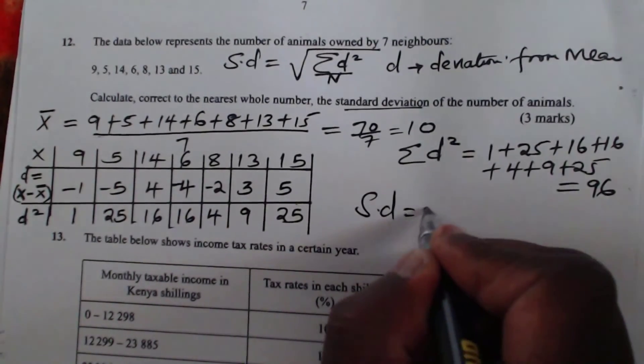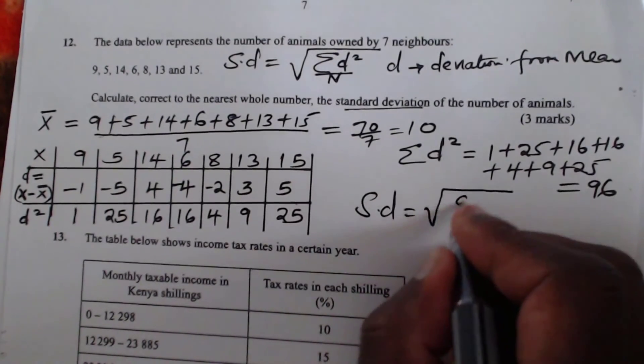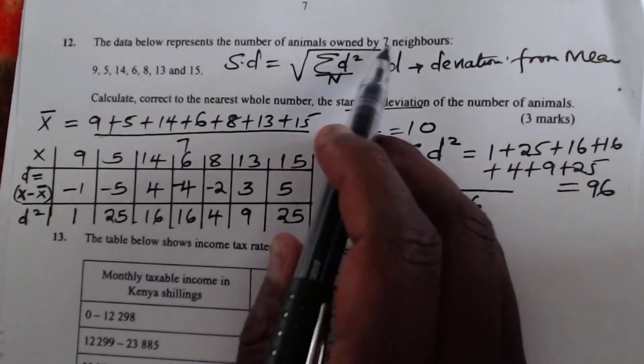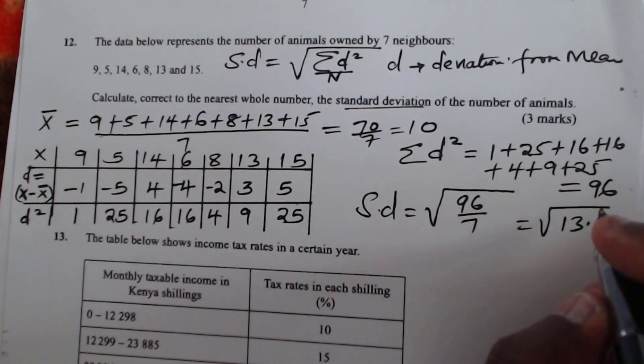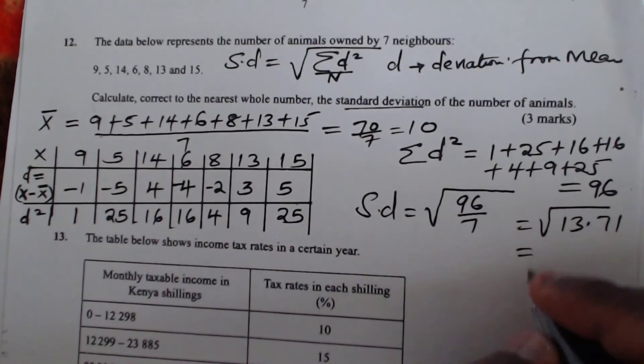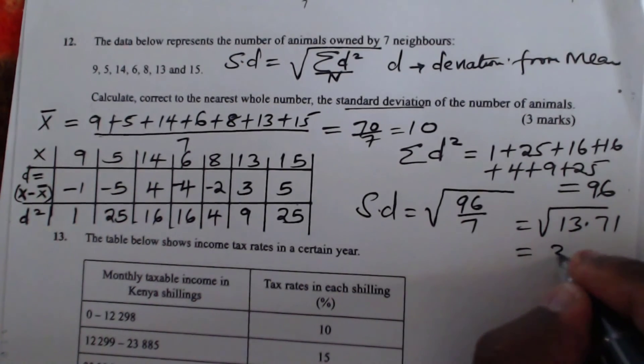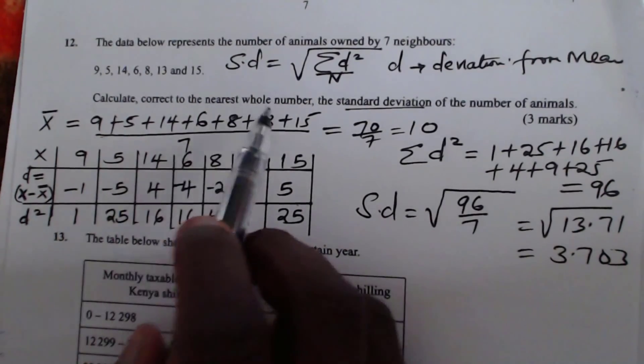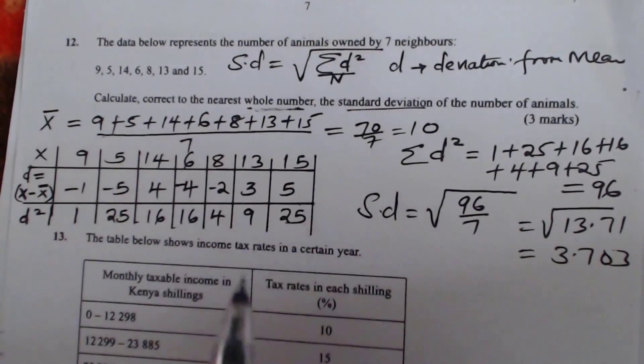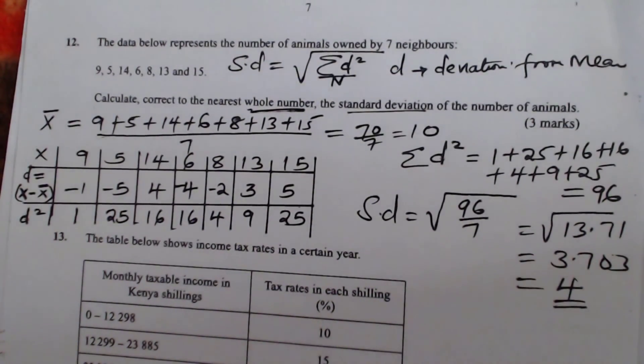Therefore, standard deviation will be given by the summation of D squared, which is 96, divided by total frequency, that is 7. Square root of 96 over 7 equals square root of 13.71. When you get the square root of these, we get 3.703, and to the nearest whole number, that is what you require to give, this will give 4. So that is how I was supposed to solve that question.